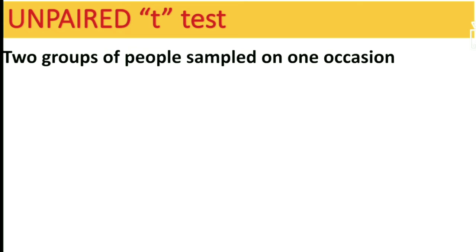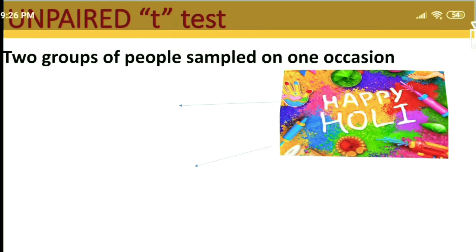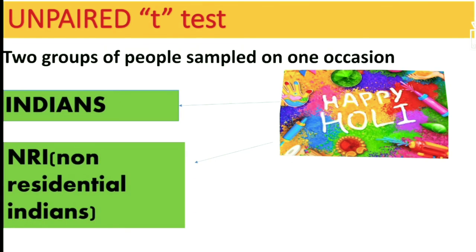In unpaired t-test, two groups of people are sampled on one occasion. For example, on one occasion — during Holi — there are two groups: Indians and NRIs (Non-Resident Indians). So here there are two groups of people on one occasion, compared at the same time. That is two groups or two samples on one occasion.